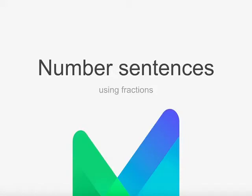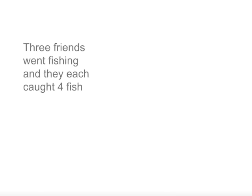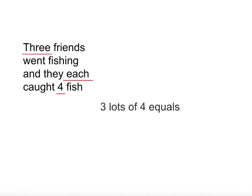Number Sentences with Fractions. We have learned about writing number sentences with whole numbers. So if three friends went fishing and they each caught four fish, we can look at the keywords and know that we have three lots of four in this story. In symbols, this is three times four, which is twelve.